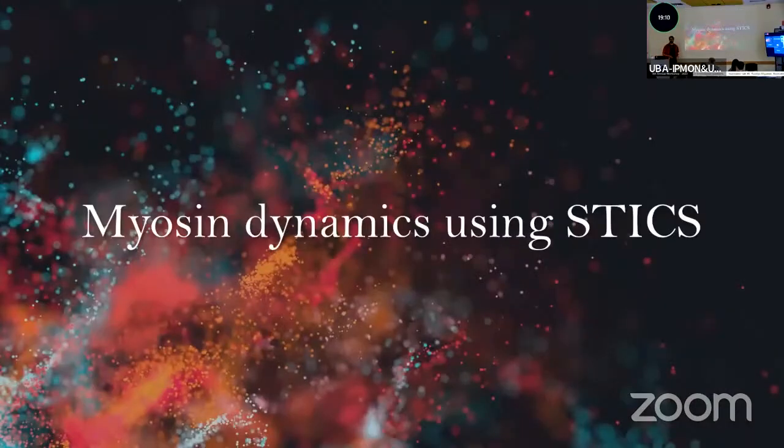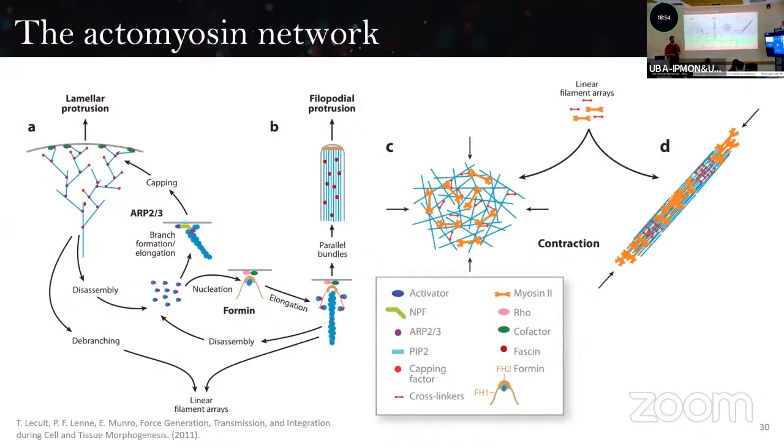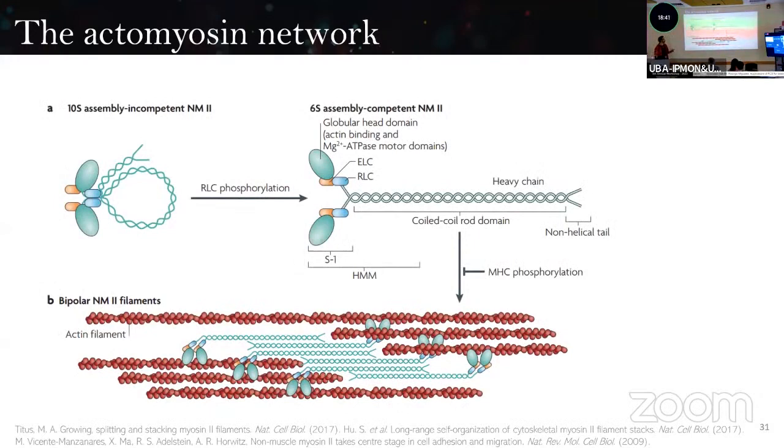First, I'm going to talk about myosin dynamics using STICS. The cytoskeleton is in continuous remodeling in the front with lamellar protrusions of branched actin that can also form bundles and contracting fibers. We're interested particularly in myosin II, which forms bundles that accumulate along the fibers. Non-muscle myosin, when inactive, is in a circular shape. When it's phosphorylated and activated, it opens up like this.